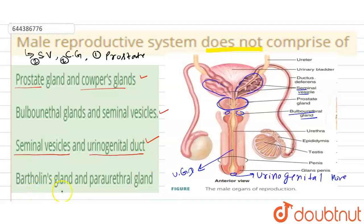The next option is Bartholin gland and paraurethral gland — these two glands are part of the female reproductive system. The Bartholin gland is also known as the greater vestibular gland; it consists of two pea-sized compound alveolar glands located slightly posterior to the left and right of the vaginal opening in females. The paraurethral gland, also known as the Skene's gland, lies within the wall of the distal female urethra and secretes mucus during sexual activity. It is homologous to the male prostate gland but is found in the female reproductive system. Therefore, this option is not true for the male reproductive system, making it the correct answer.